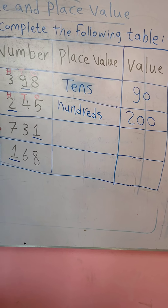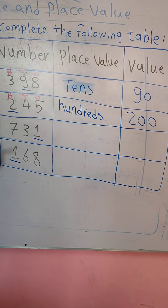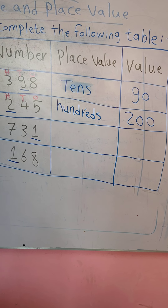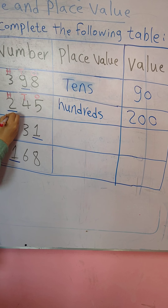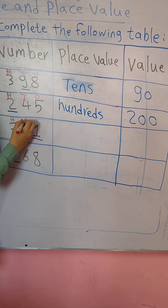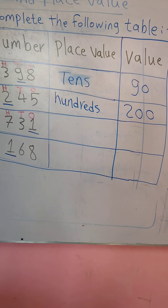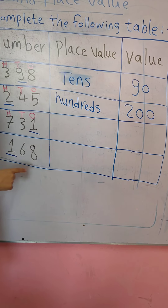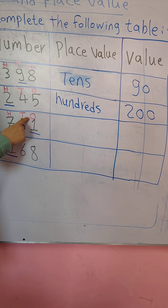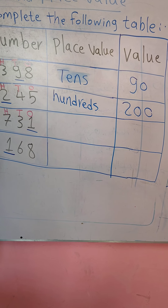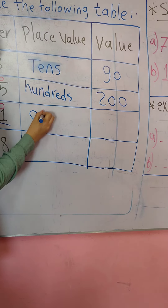The next example: we have 731. I'll write H, T, O. The place value of number 1 — number 1 is in O (ones), which means 1, so the place value is ones.